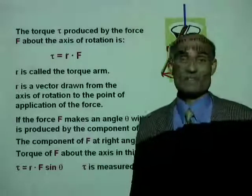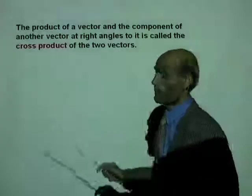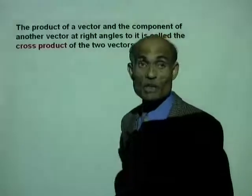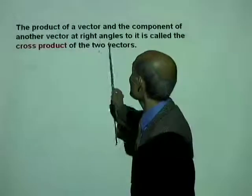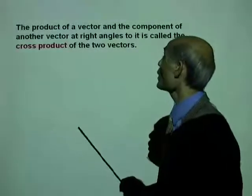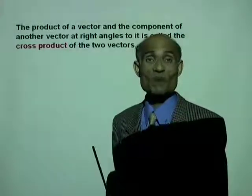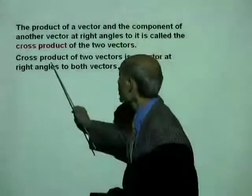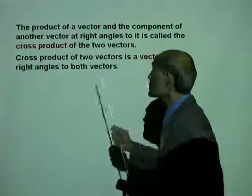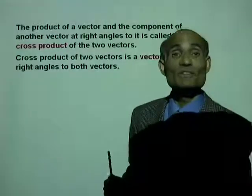The torque of a force is measured in meter newton. We already said the product of a vector with another vector at right angles to it is called the cross product of two vectors. Therefore, the cross product of two vectors is a vector at right angles to both the vectors.